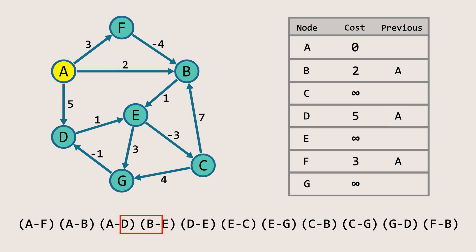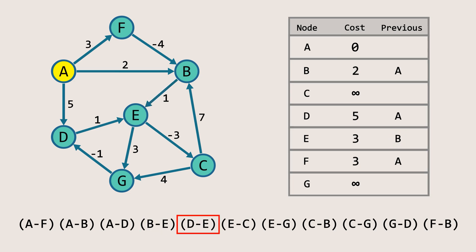Next, for the edge BE, the cost of node B is two and the weight of the edge is one, giving a total of three. This is less than the current cost of node E, so we update the cost of node E to three and set node B as the previous node for node E. Next, for the edge DE, the cost of node D is five and the weight of the edge is one, giving a total of six. This is not less than the current cost of node E, so there's no need to update the cost.